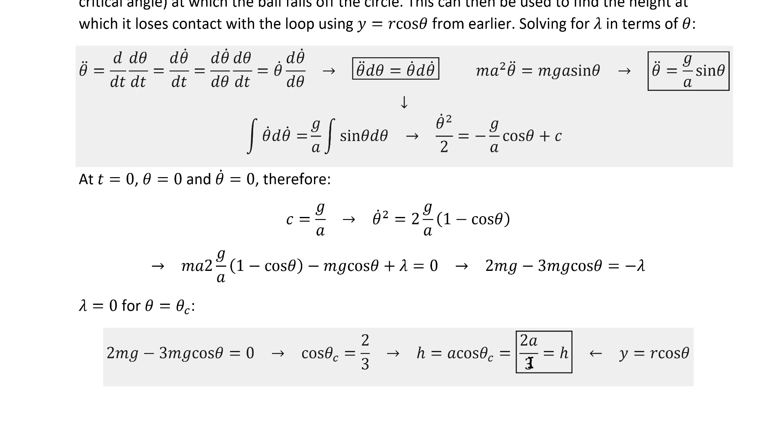That's how you can use Lagrange multipliers to calculate when a constraint stops applying in a system where a constraint applies for only part of the time evolution. I hope this video is interesting. Thanks for watching.